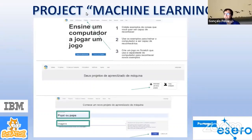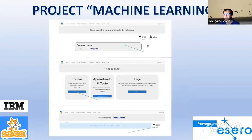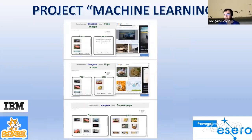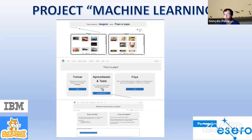First, students have to develop a project and choose if they want to analyze images, texts, or numbers, and then they go to the training. In this, we have two categories, and so they have to put images about the two categories — 10 images — then we go to the learning of the machine and the test.